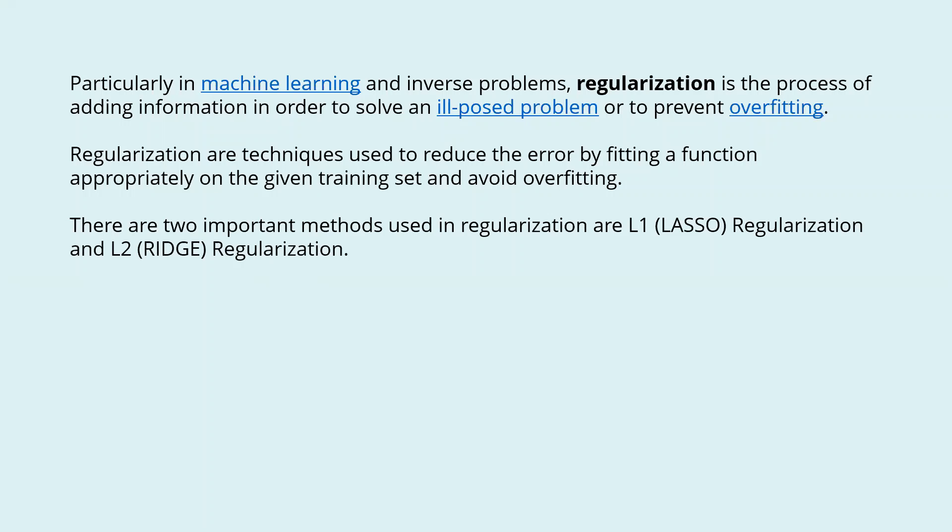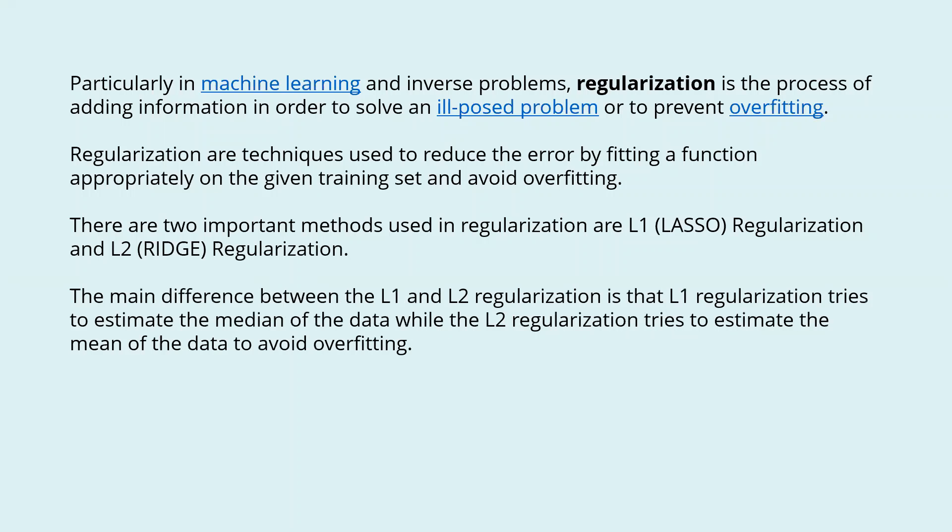There are two important methods used in regularization: L1 (LASSO) and L2 (RIDGE). The main difference is that L1 regularization tries to estimate the median of the data while L2 regularization tries to estimate the mean of the data to avoid overfitting.